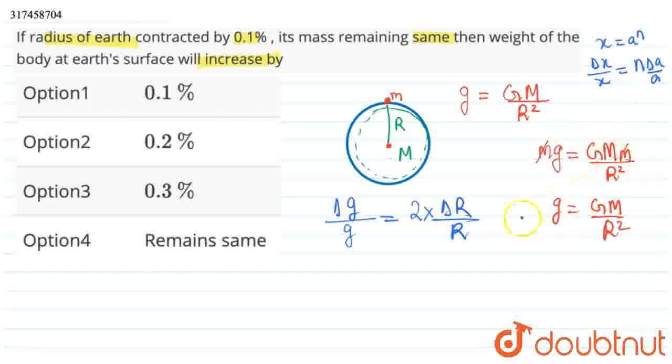Now if it's 1 by a to the power n, then the same thing happens - n multiplies here. So we've done the same here. Now what do we do? Multiply both sides by 100. Then what will happen? Delta g upon g into 100 equals 2 times delta r upon r into 100.